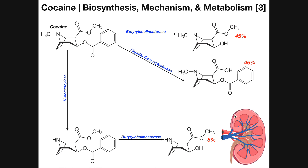The other 10% of the metabolism is due to a minor pathway accounting for about 5%, with the rest being other minor pathways. Cocaine can also react with an N-demethylase enzyme, which removes the methyl group from the nitrogen, generating a regular secondary amine. Once this occurs, butyrylcholinesterase again removes the benzoyl group, generating a metabolite that accounts for about 5% of the metabolic destruction of cocaine, and it is water-soluble enough to be eliminated via the kidneys. Some other minor pathways account for the other 5%, but this is the vast majority of how cocaine is metabolized and then eliminated renally.